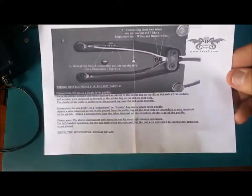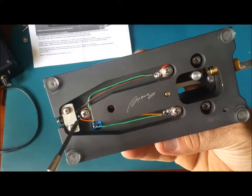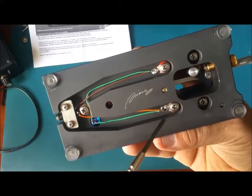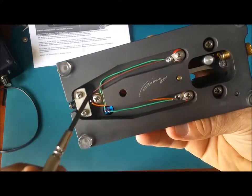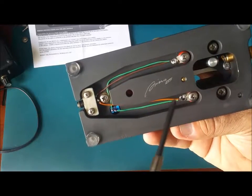I went ahead and did the wiring on my key. I took the orange wire here, that's for my dits, that'll be on the bottom side here, and then the brown wire for my dots.